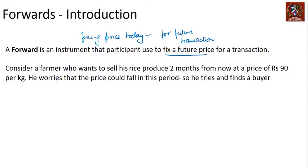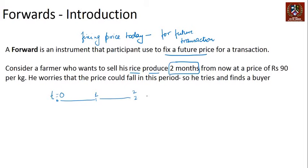To understand this better, consider the example of the commodities market. There is a farmer who wants to sell his rice produce two months from now, and he wants to sell it at rupees 90 per kg. He worries that the price could fall in this period. We are standing here at t = 0, and he has to sell it after two months.